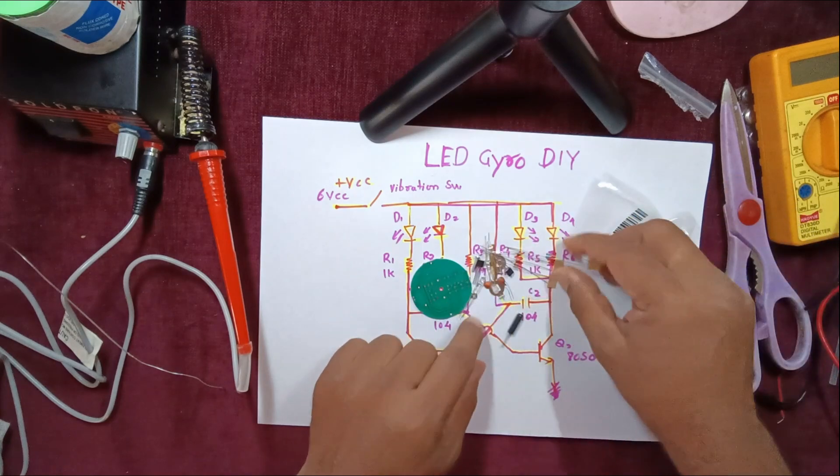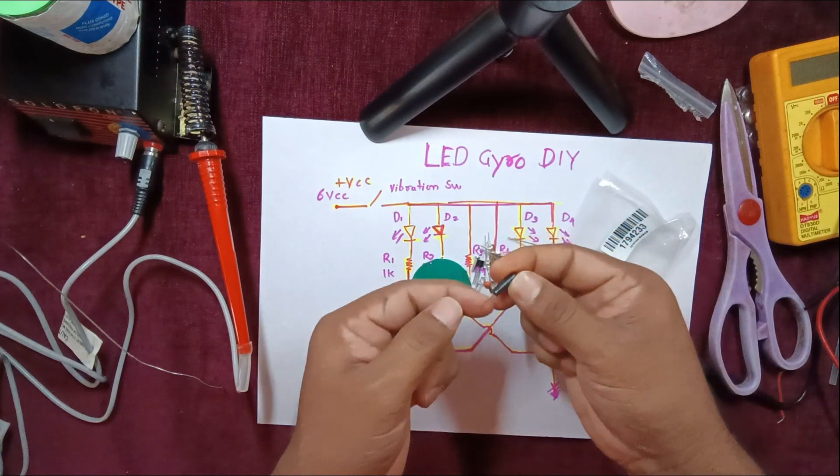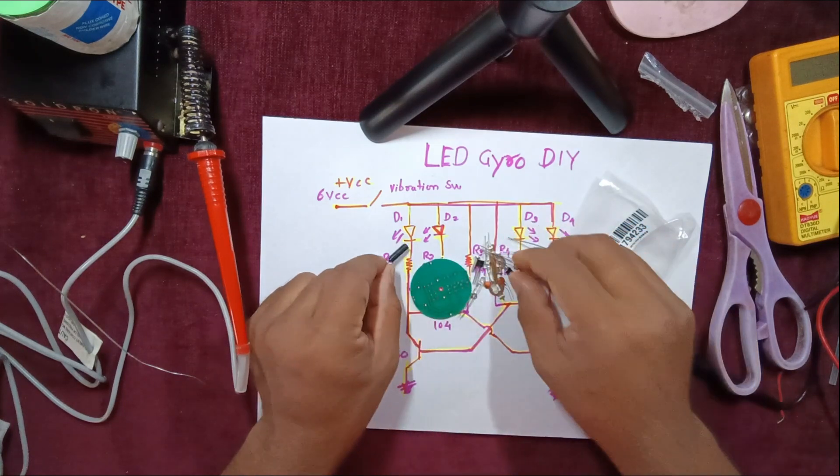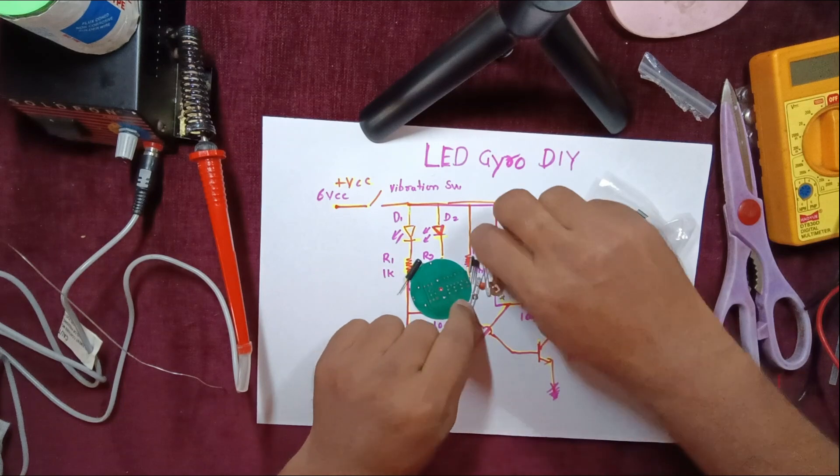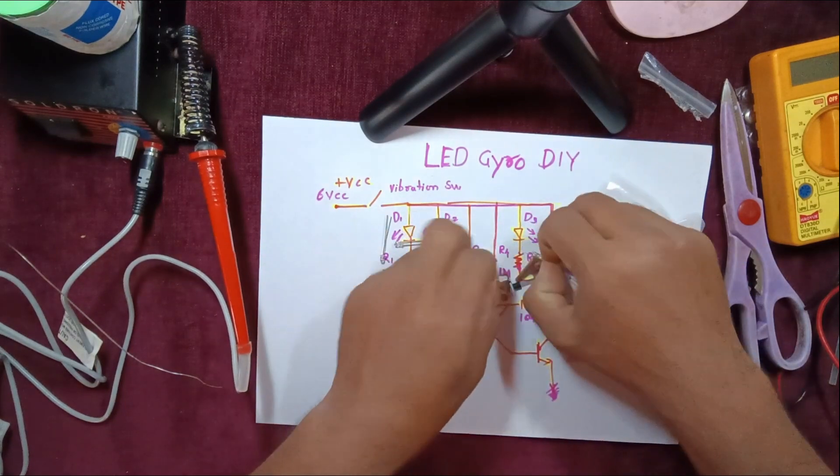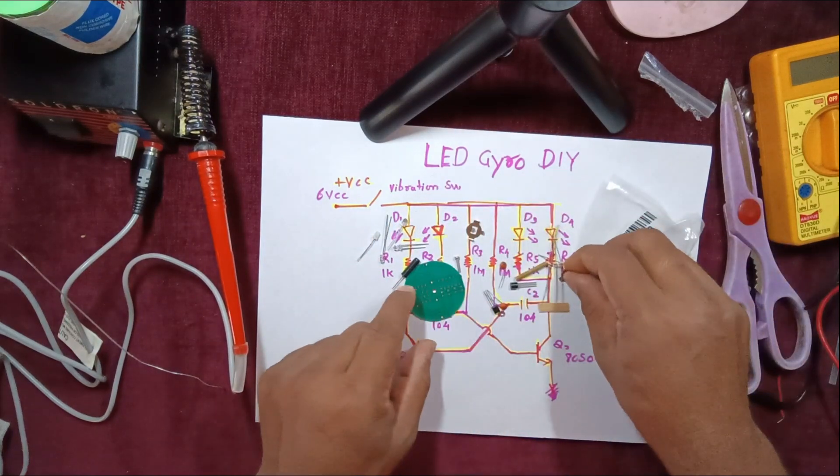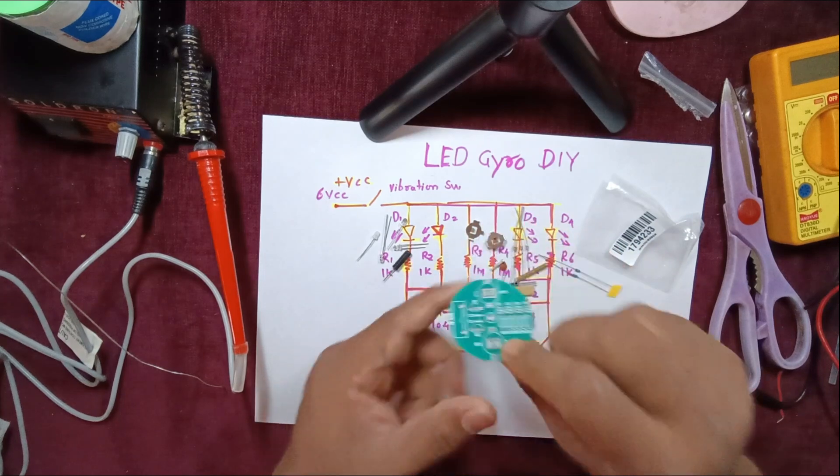For your reference you can see this is a vibrator switch over here. You have got four different LEDs and two battery holders.